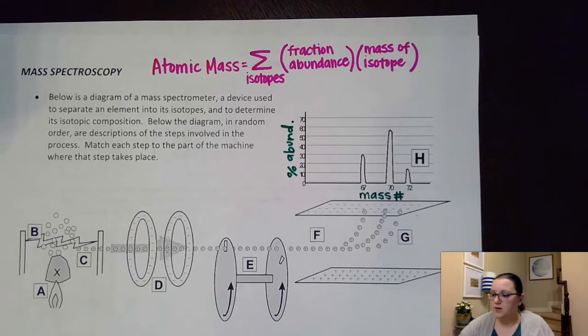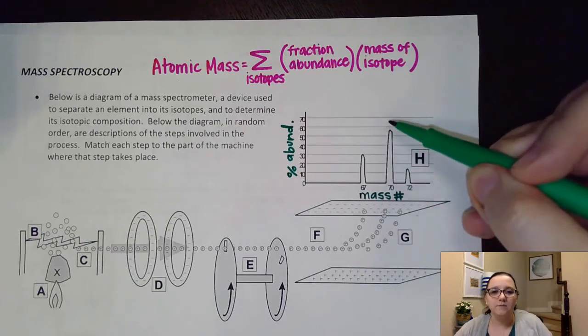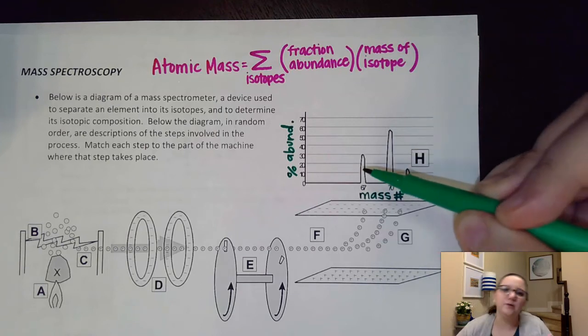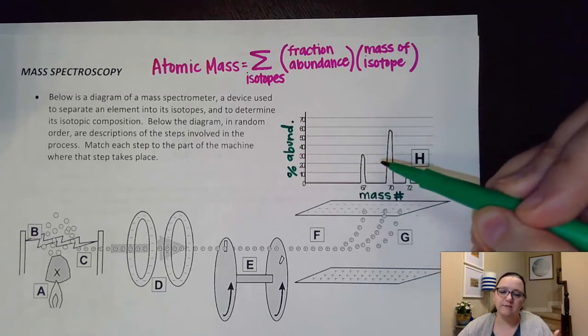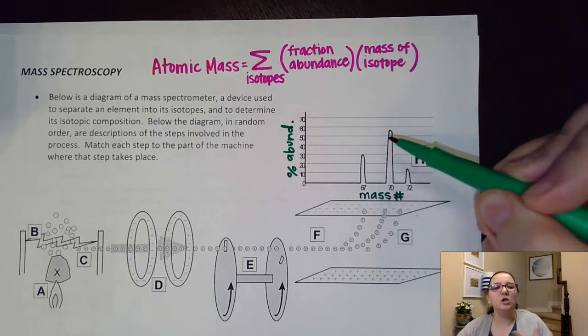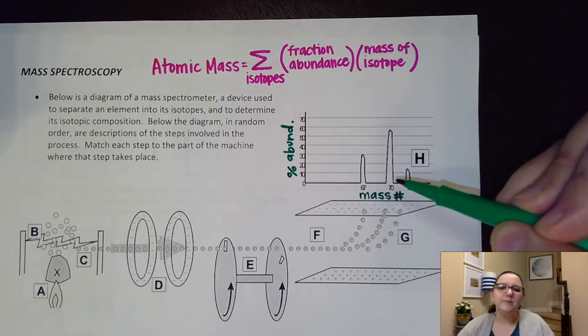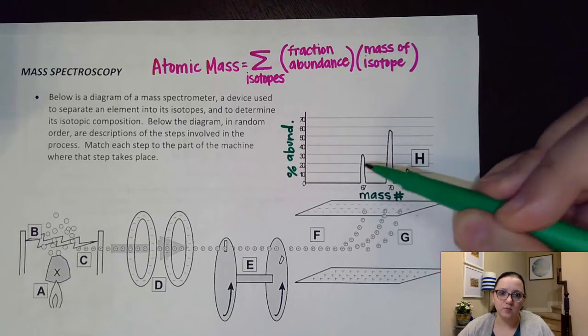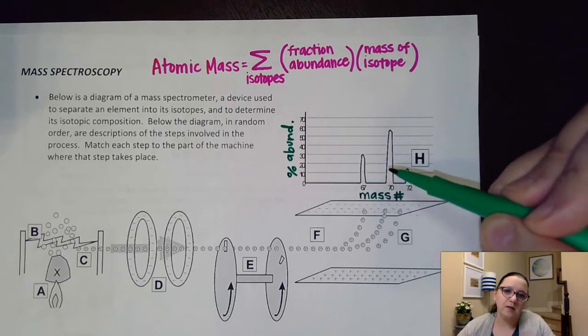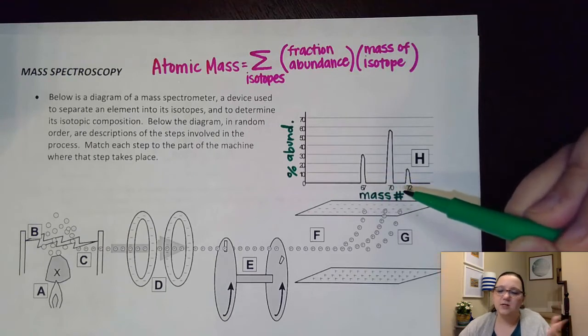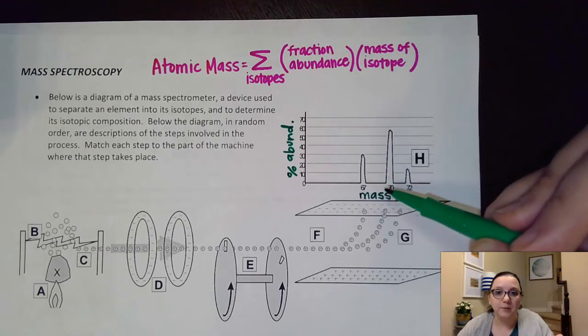If you think about it for just a minute, we know we have a lot of mass of 70 hitting this plate. A little bit of 72, and a little bit more of 67. So it's likely that our average atomic mass is close to 70, but maybe a little less, because this peak is fairly high, and it's several mass units lower than 70. So there's a chance that we might be a little bit below 70.